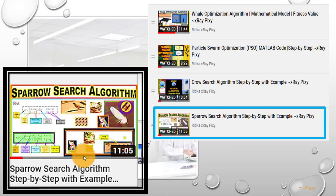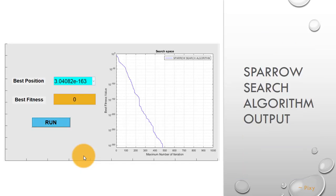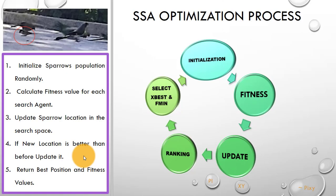Now we will learn how this algorithm is working with the MATLAB code. This is the final output for this algorithm — in the end we will return the best position and the best fitness value. This is the simple optimization process for this algorithm.